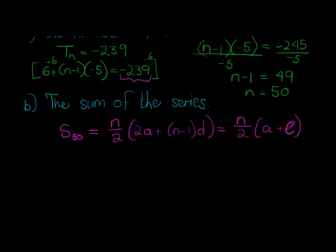There we go, that's the last term in the sequence, so why not just use that. So I have 50 over 2, plus a is equal to 6, and L is equal to negative 2, 39, which gives me 25 times 6 minus 239, which gives me 25 times—6 minus 239 gives me negative 233.